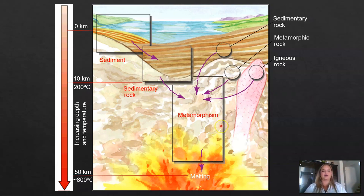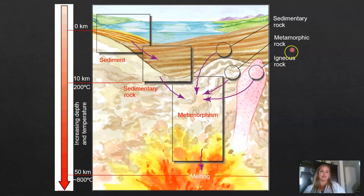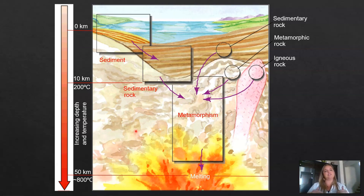Looking at where these rocks form in the crust: sedimentary rocks form at or near the earth's surface; igneous rocks form deep in the crust; and metamorphic rocks form in a narrow zone where heat and pressure will alter the rock but not completely melt it. This occurs between 10 and 50 kilometers. At 50 kilometers, rocks start to melt, and before 10 kilometers, the pressure and heat are not great enough to alter the rock physically or chemically.